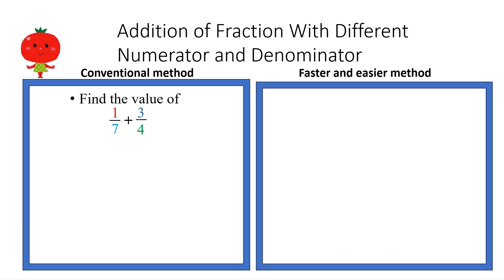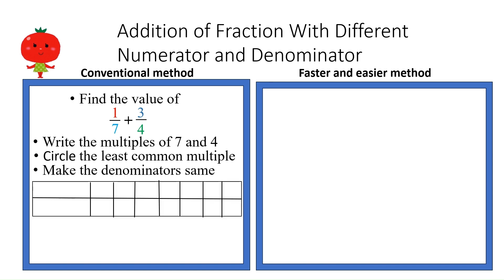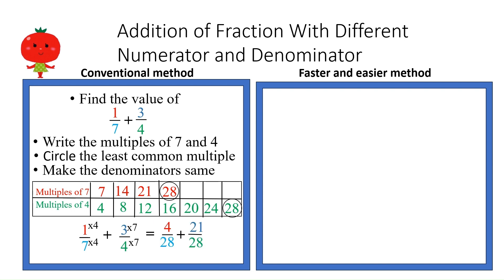Addition of fractions with different numerator and denominator. Find the value of 1/7 plus 3/4. Write the multiples of 7 and 4 as before, circle the least common multiple, and make the denominators the same. List multiples of 7 and 4, and circle the least common multiple. Make the denominator the same as in equivalent fractions, and write 4/28 plus 21/28. Using addition of like fractions, this gives 25/28.